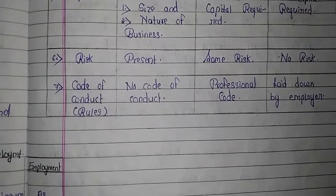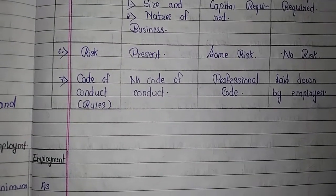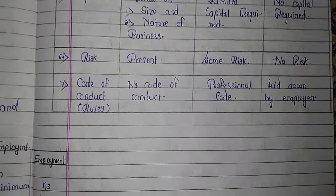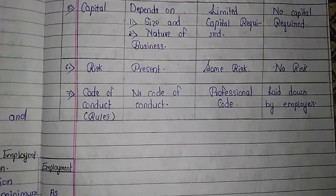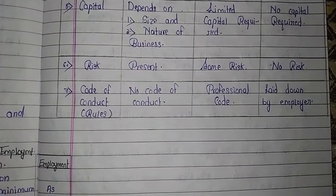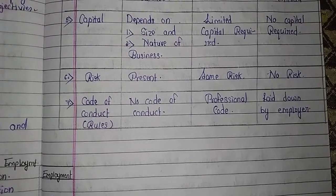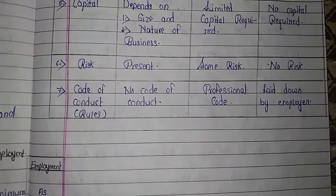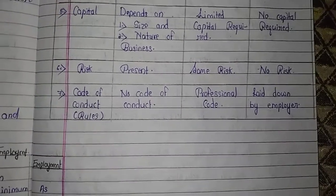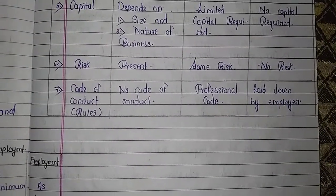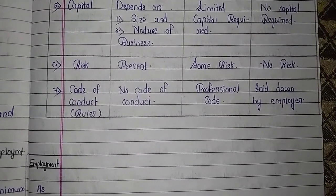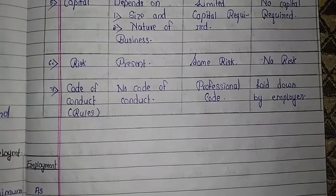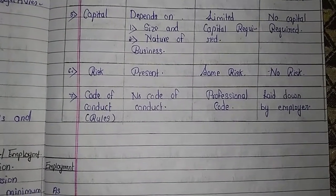The seventh basis is code of conduct, meaning rules. In business, there is no requirement of a code of conduct. In profession, there are codes of conduct created by professional bodies which must be followed. In employment, the code of conduct is laid down by the employer.